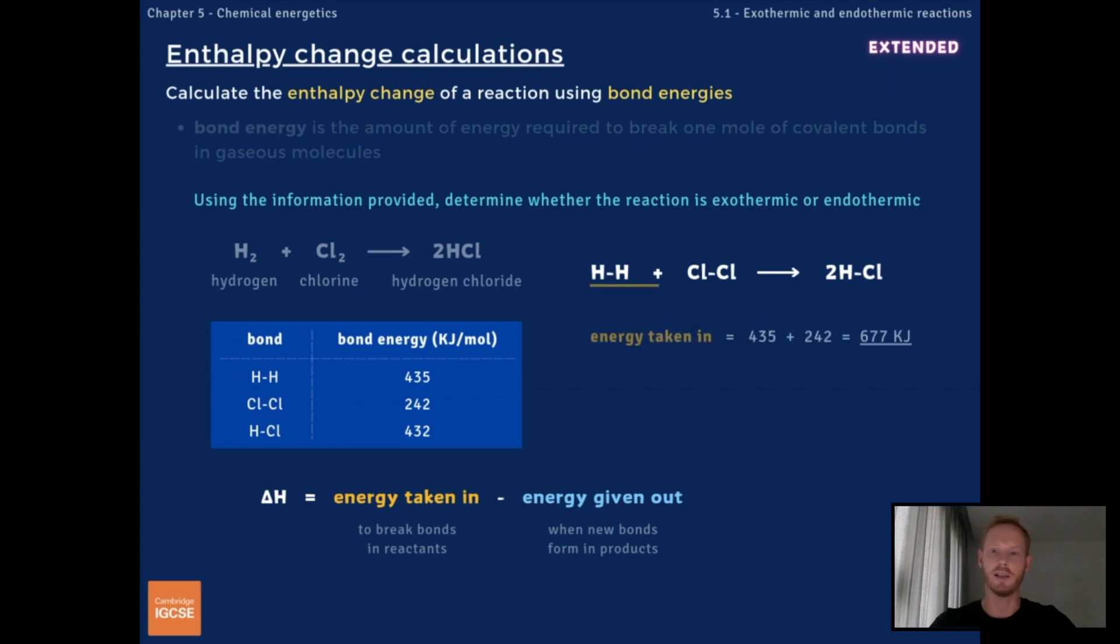Using the data provided, we can calculate that energy taken in is 677 kJ and energy given out is 864 kJ. Because energy given out when new bonds form is greater than energy taken in to break bonds in the reactants, enthalpy change is negative and the reaction is exothermic.